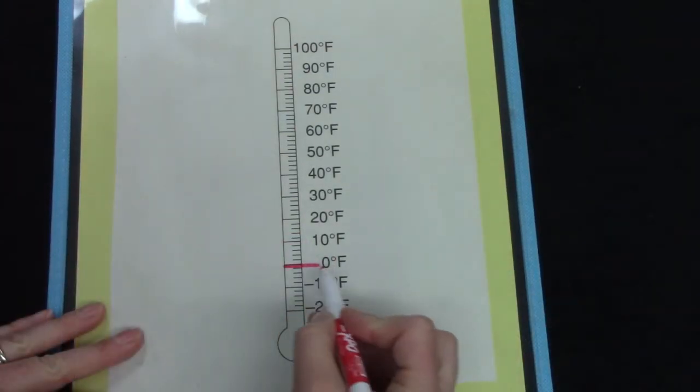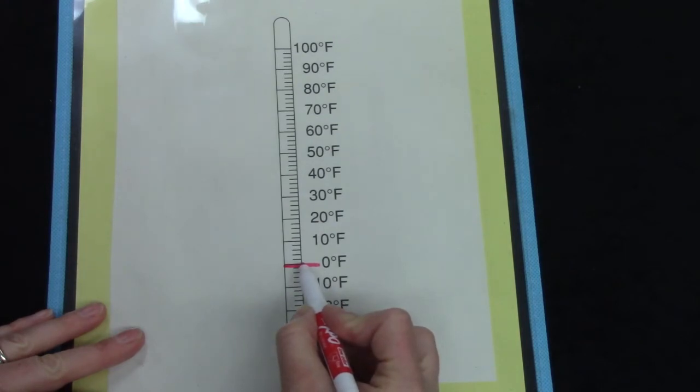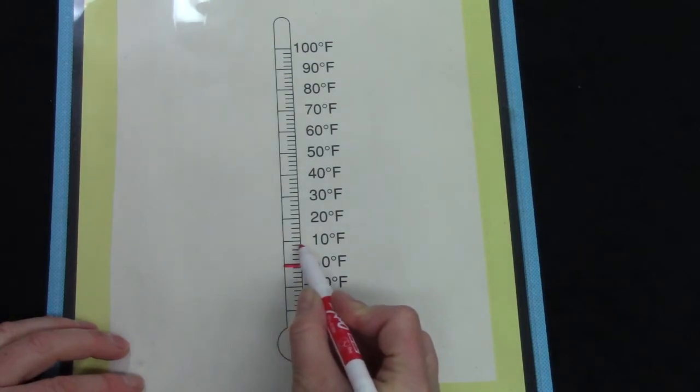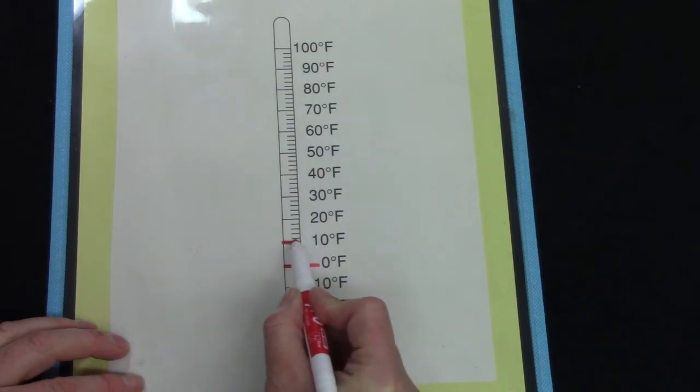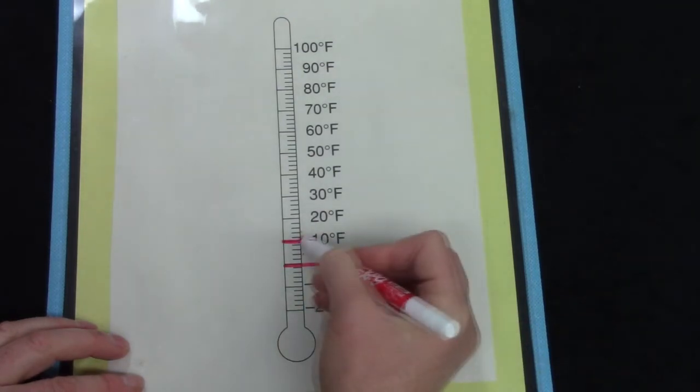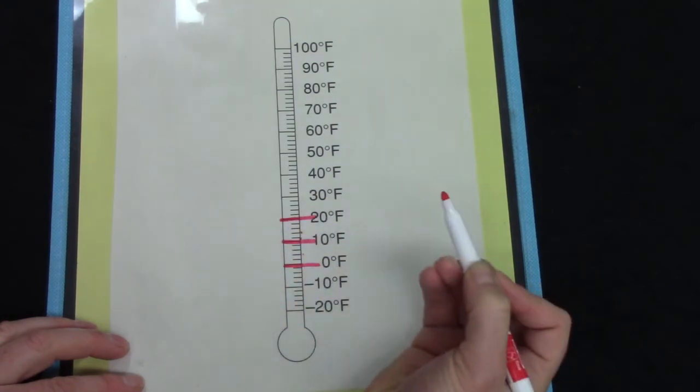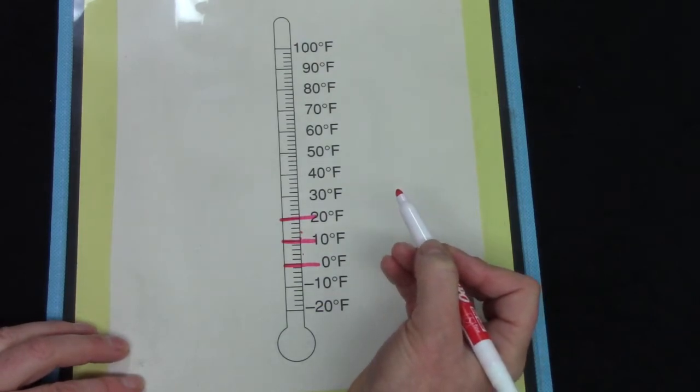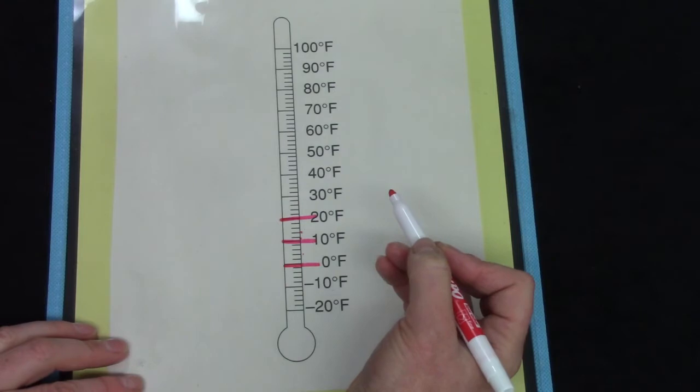When we start at 0 degrees and we count each line by 2, it looks like this: 2 degrees, 4 degrees, 6 degrees, 8 degrees, 10 degrees, 12 degrees, 14 degrees, 16 degrees, 18 degrees, 20 degrees. And it keeps going, counting by 2 each time.